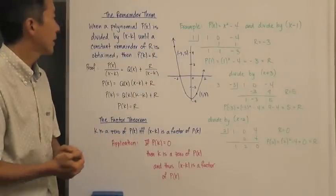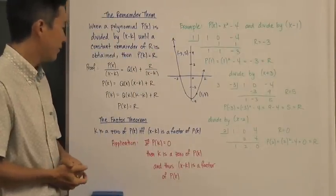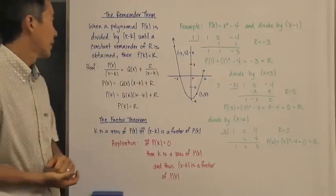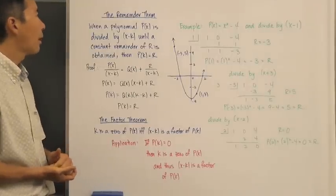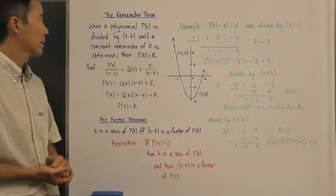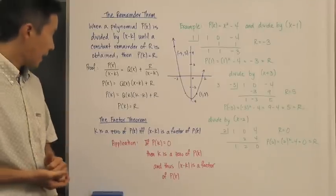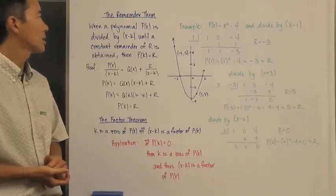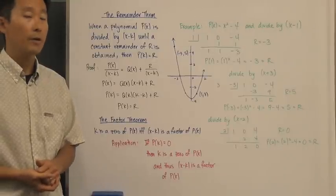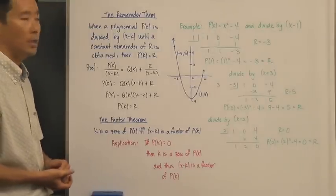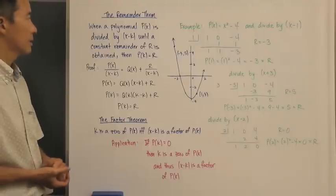Let's take a look at the Remainder Theorem and the Factor Theorem. The Remainder Theorem says: when a polynomial p(x) is divided by a linear factor x minus k until a constant remainder r is obtained, then p(k) is actually equal to r. Now let's take a look at the proof of that.